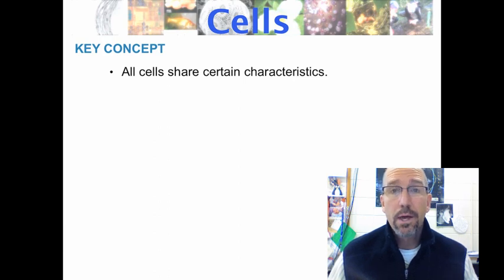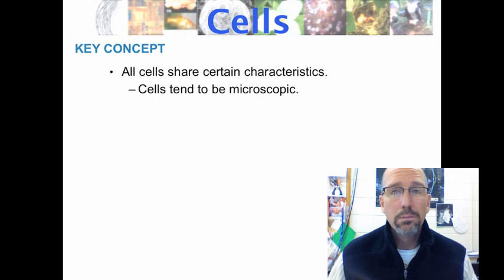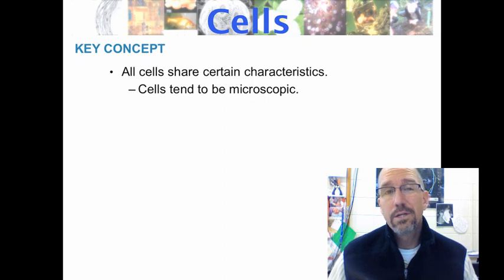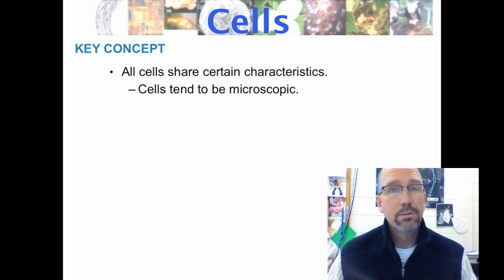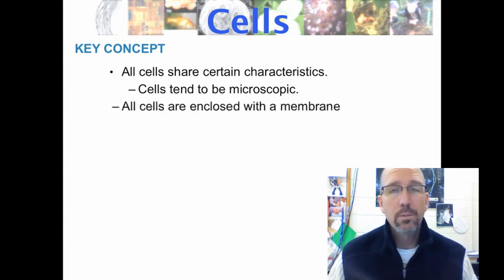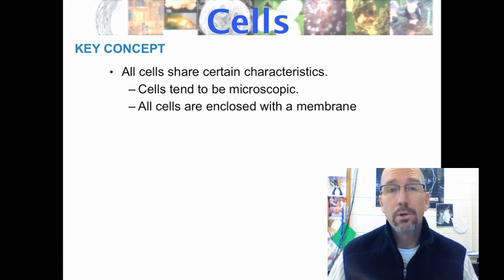All cells have things in common. They're small. Skin cells are about 30 micrometers across, red blood cells maybe 5 to 10 micrometers across, down to bacteria which are two to three micrometers — really small, can't see them with the naked eye very well.